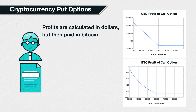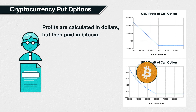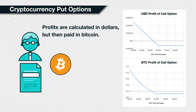So why do we have a separate lecture for calculating the profit or loss of cryptocurrency put options? Just like with the cryptocurrency call options in section 4, the reason is that while the profit or loss is still calculated in dollars, the cryptocurrency put options on Deribit use the cryptocurrency itself as collateral. This means that after calculating how many dollars the put option is worth at expiry, this amount must then be converted into the cryptocurrency. The premium paid for the option is also set in cryptocurrency.